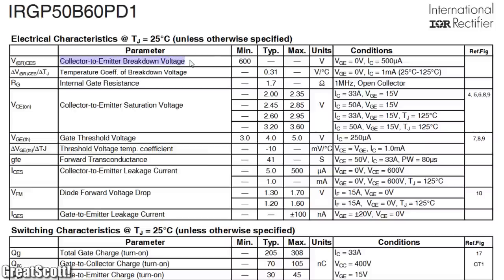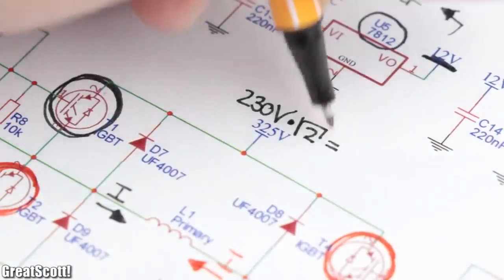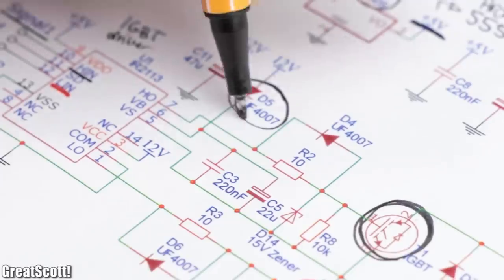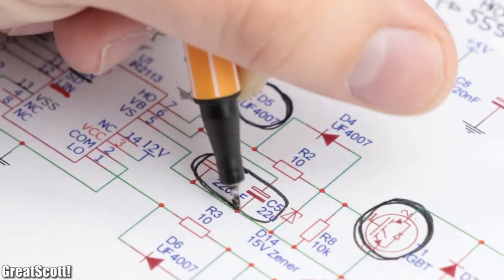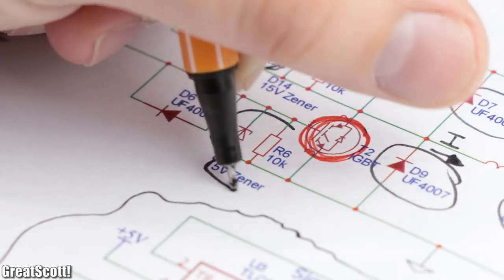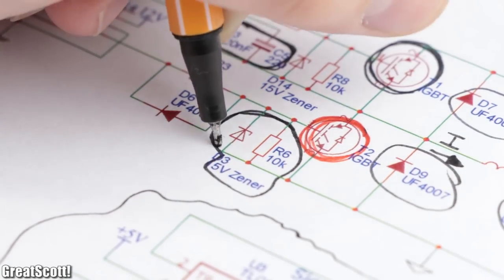And since the IGBTs are rated for up to 600 volts, it should be possible to supply rectified mains voltage to them. Then there are also bootstrap diodes and capacitors, gate diodes and resistors, flyback diodes, as well as pull-down resistors and zener diodes for safety.